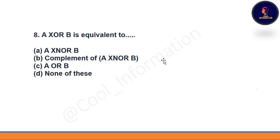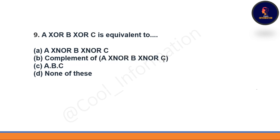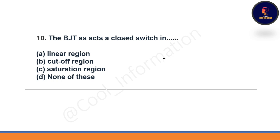Next question: A XOR B is equivalent to — option B is correct: A XOR B is equivalent to complement of A XNOR B. Next question: A XOR B XOR C is equivalent to what — option D is correct: complement of A XNOR B XNOR C. Next question: The BJT has a closed switch in — option A: linear region, option B: cutoff region, option C: saturation region, option D: none of these. The correct option is option C — saturation region.